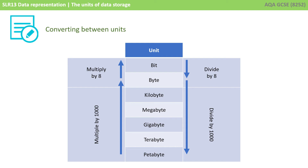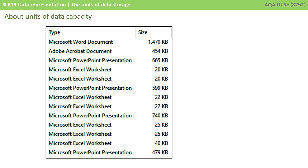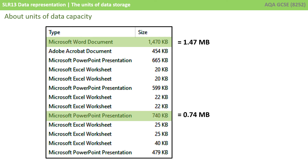Here is this concept in action. Let's look at some real examples. Here we can see a list of files in a typical file storage system — we've hidden the file names so we can focus on what's important. If we take the top one, we have a Microsoft Word document which is 1,470 kilobytes. If we wanted to know what that was in megabytes, then we divide by 1,000, so that's 1.47 megabytes. Further down, we have a Microsoft PowerPoint file which is 740 kilobytes. Again, if we divide by 1,000, that is 0.74 megabytes. So it's quite straightforward to convert between the two units here.